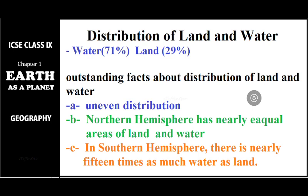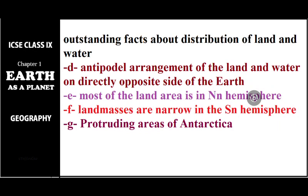There are some outstanding facts about this distribution. First, the distribution of water is uneven. The northern hemisphere has nearly equal areas of land and water, whereas in the southern hemisphere water is nearly 15 times more than the land area. This means there is an uneven distribution of land and water.